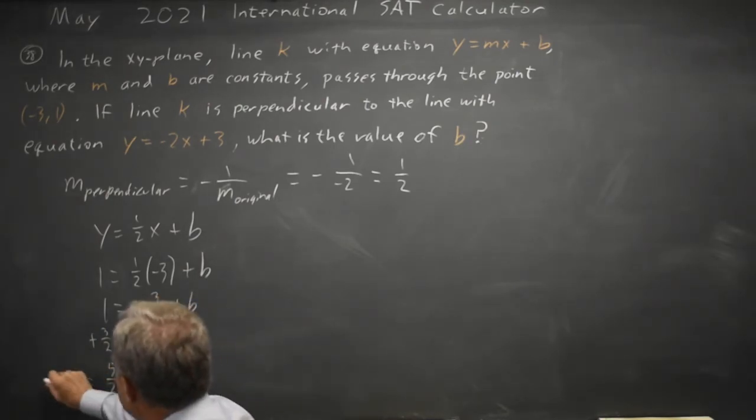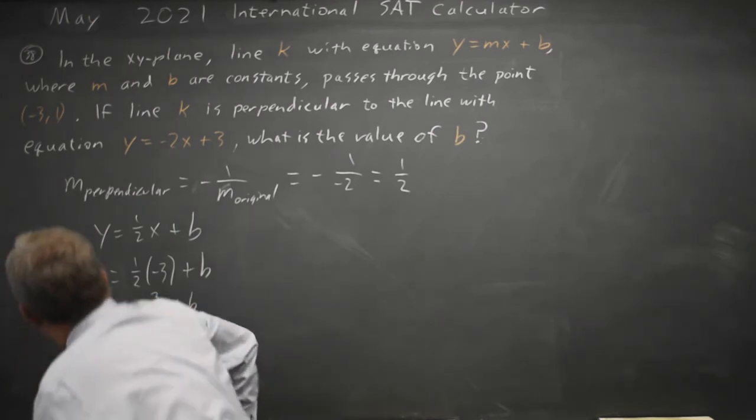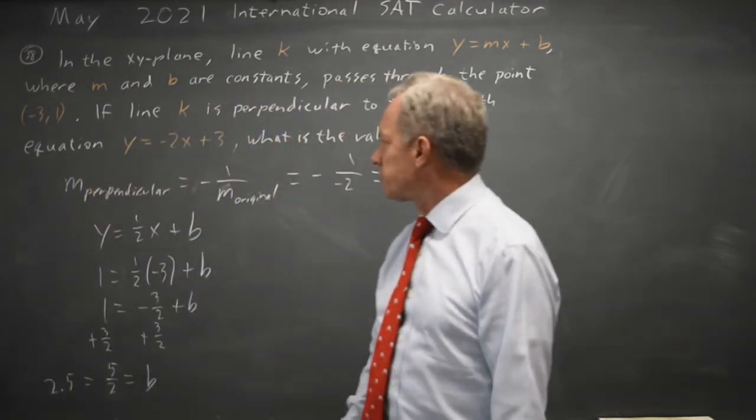Or we could write that as 2.5 — 1 plus 1.5 gives us 2.5 if we prefer decimal form.